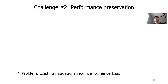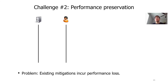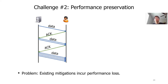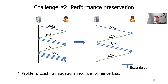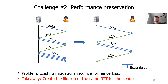Our second challenge is to preserve connection performance. Let's look at why we have a performance problem. Suppose a user is downloading a file from a server using TCP. After the connection is established, the server will send a batch of data to the user. The user will send back an ACK packet to indicate that she has received the data. The server will send more data, usually double the amount of the first round, and so on. Now, if we add actual delay, because of the increase in RTT, in the same amount of time we transmit less data. Therefore, existing mitigations incur performance penalty. This tells us that to maintain the same performance, we can create the illusion of the same RTT for the sender.